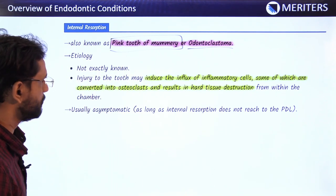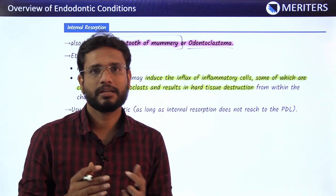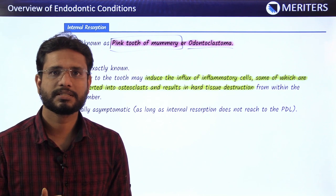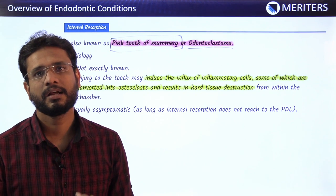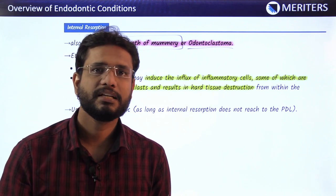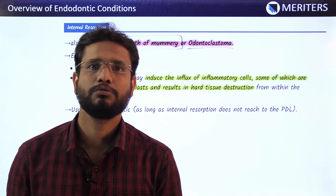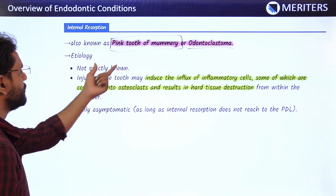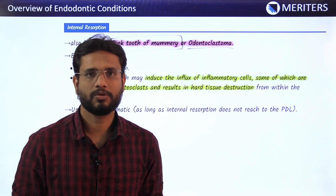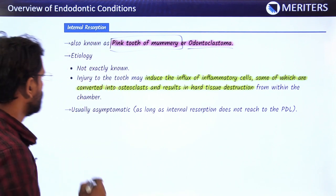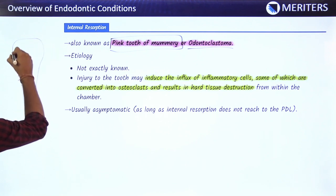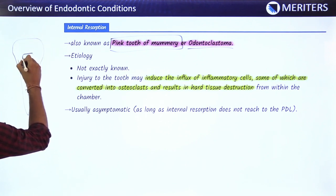We call it 'pink tooth of mummery' because due to the resorption the pulp becomes visible. The more resorption occurs, the more thinning of the outer enamel occurs, and the pulp is seen from outside, making the tooth color appear pink. The etiology of this condition is not exactly known.